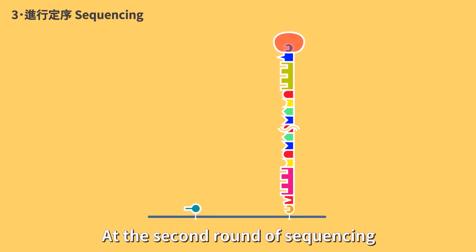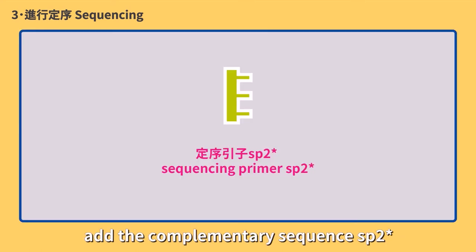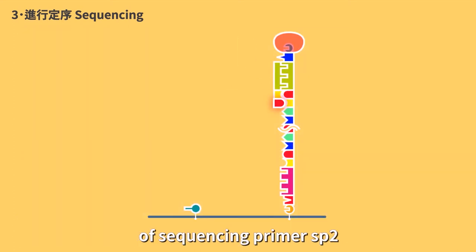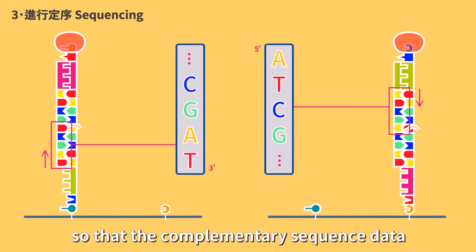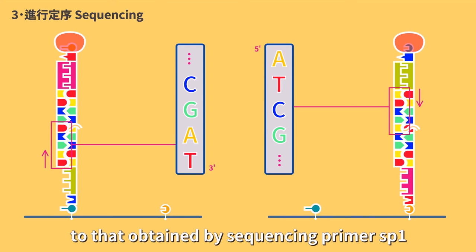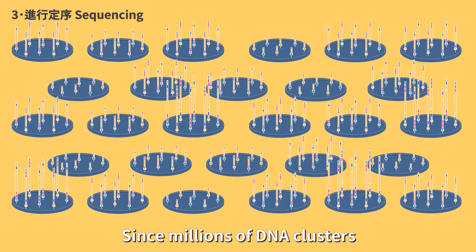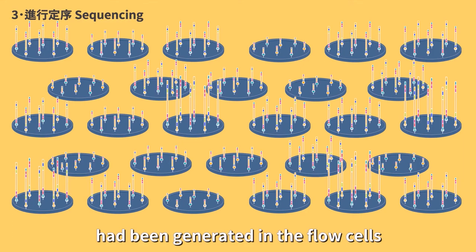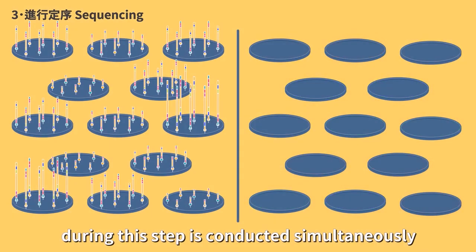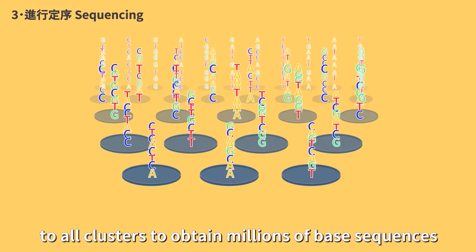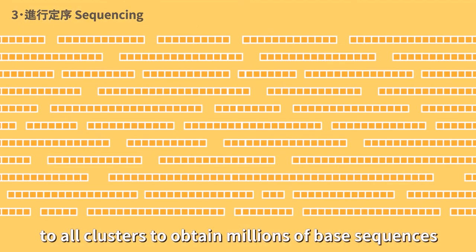At the second round of sequencing, use the complementary sequence Sb2 star of sequencing primer Sb2 as primer for elongation. Identify most of the sequence of this strand so that the complementary sequence data can be compared to that obtained by sequencing primer Sb1. Since millions of DNA clusters have been generated in the flow cells during the last step, sequencing performed during this step is conducted simultaneously to all clusters to obtain millions of base sequences.